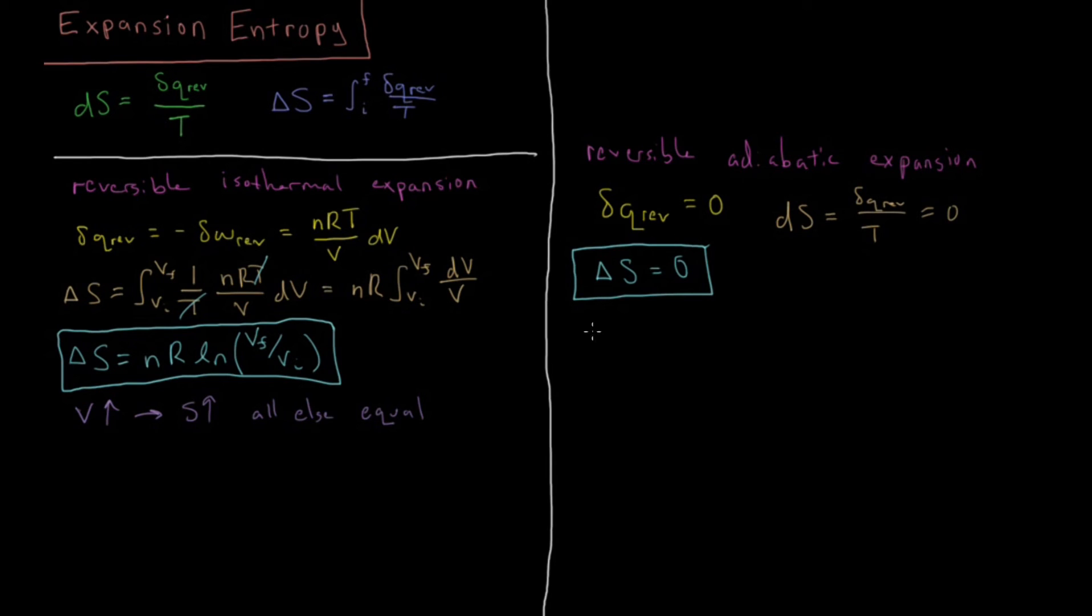Well, as we said, if the volume goes up, that means the entropy is going to go up if everything else is equal. But likewise, the work—the energy required to do the work—left the system. So the energy of the system went down, and as a result, the temperature of the gas molecules went down.